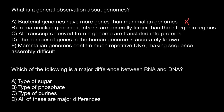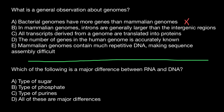Variant B: in mammalian genomes, introns are generally larger than the intergenic regions. Imagine that this line represents a piece of the chromosome. Here we have one gene, and with red color we show the pieces which code for the protein. Between them we have introns, and as you can see, introns are much bigger than exons which code for the protein.